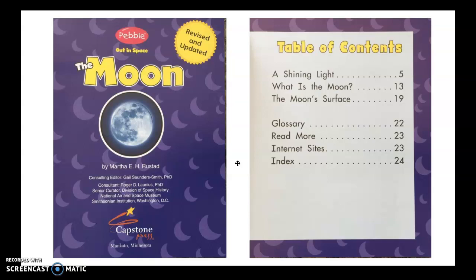And so on page five, there's a shining light. On page 13, it says, what is the moon? The moon's surface starts on page 19. That's called the table of contents. It lets us know what we're going to be reading about.